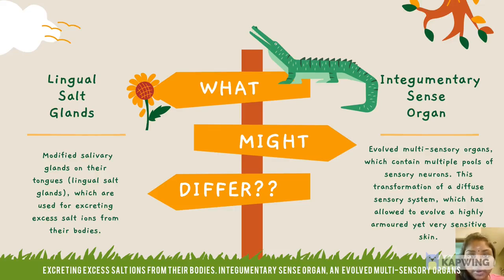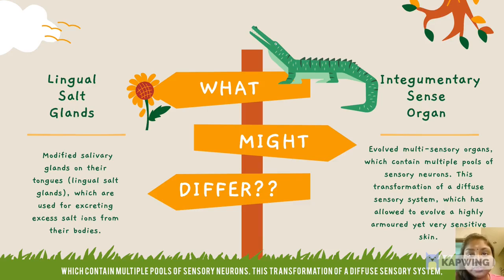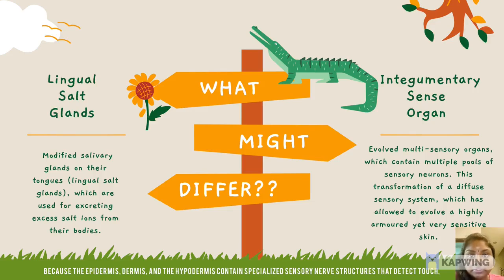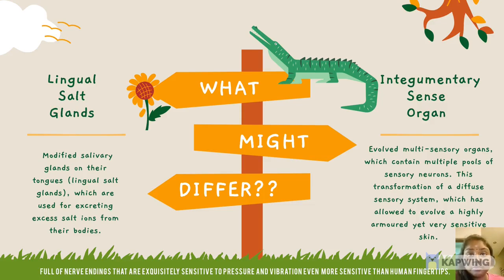As for the integumentary sense organs, these are evolved multisensory organs containing multiple pools of sensory neurons. This transformation of a diffused sensory system has allowed them to evolve a highly armored yet very sensitive skin. The integumentary sense organs in the skin act as sense organs because the epidermis, dermis and hypodermis contain specialized sensory nerve structures that detect touch, surface temperature and pain. They are full of nerve endings exquisitely sensitive to pressure and vibration, even more sensitive than human fingertips.